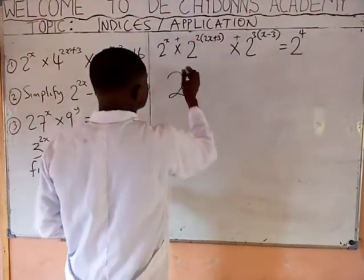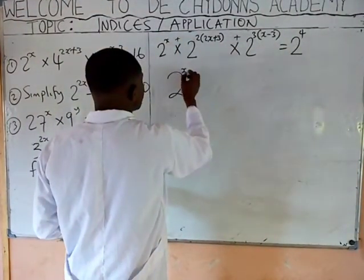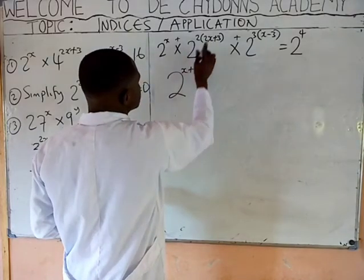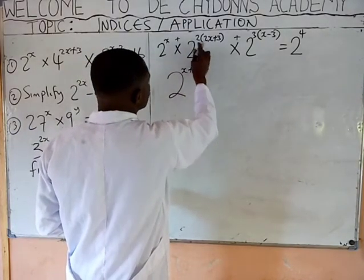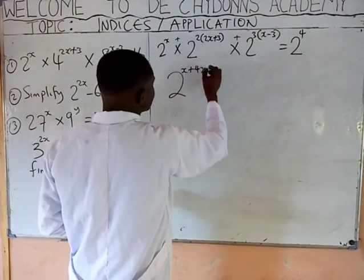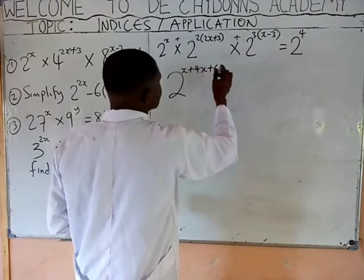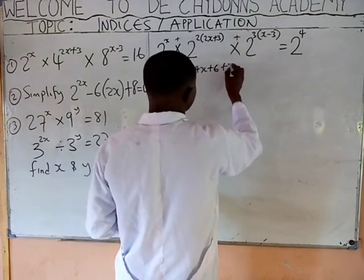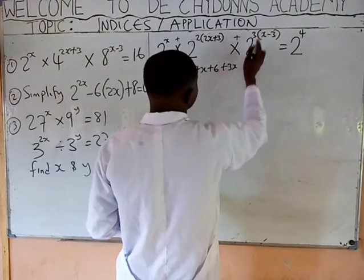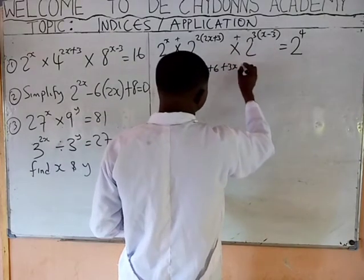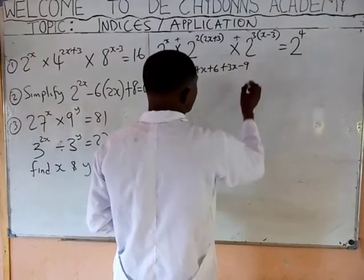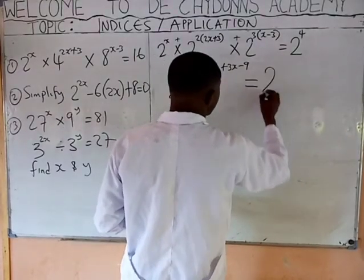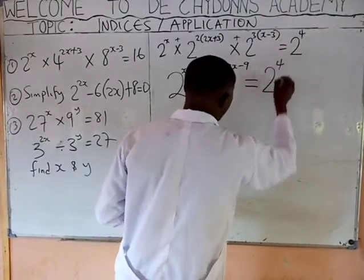Add your powers: X plus 2 times 2X gives 4X, 2 times 3 is 6, 3 times X is 3X, 3 times minus 3 is minus 9. You equate it to the other side: 2 raised to the power of 4. Since the base is equal to the base, the power must equal the power.